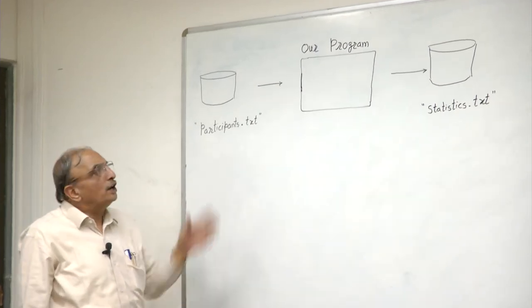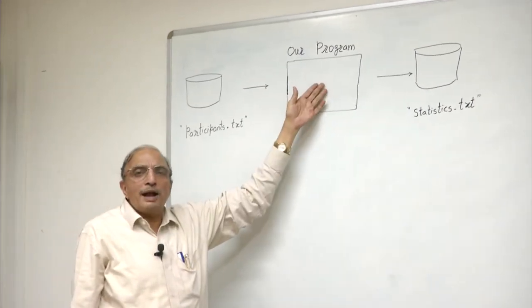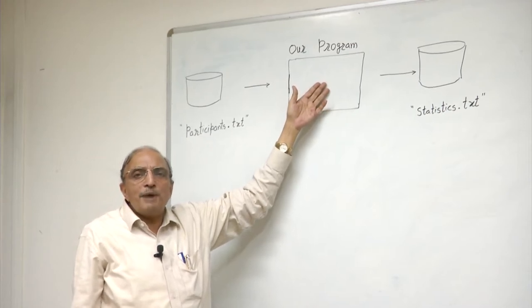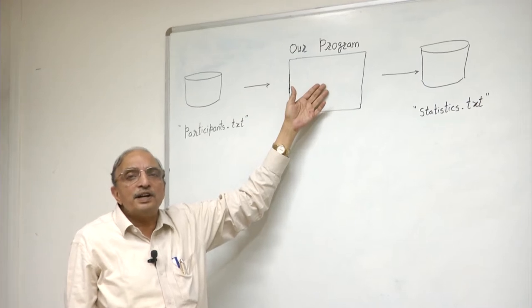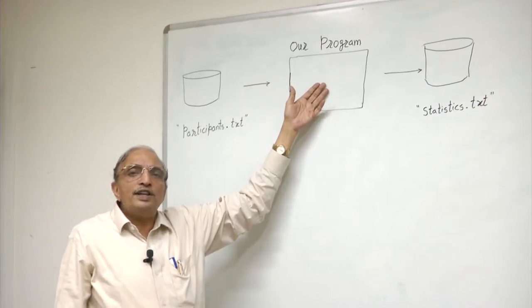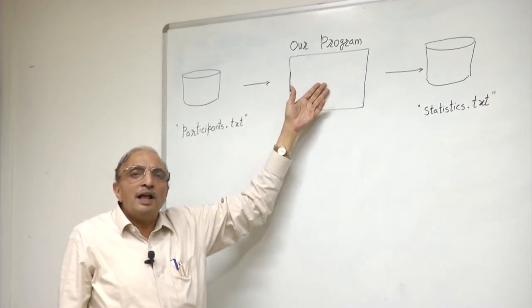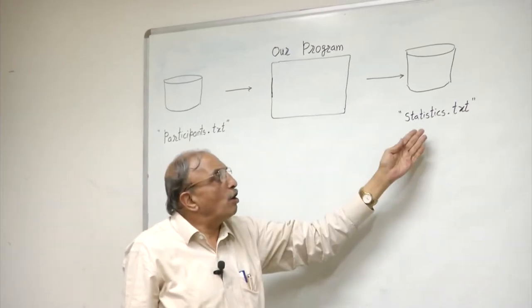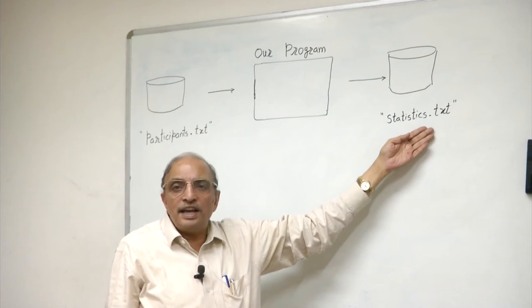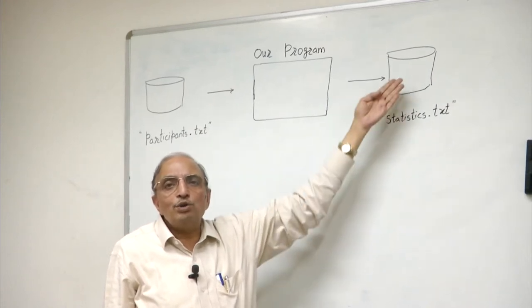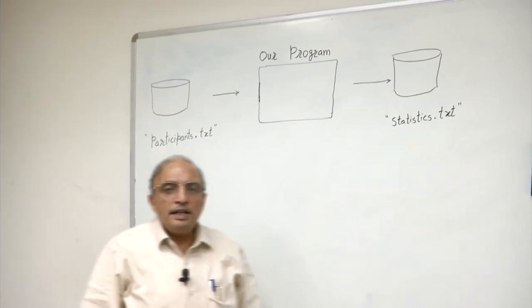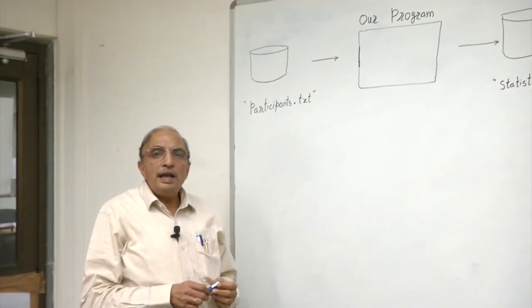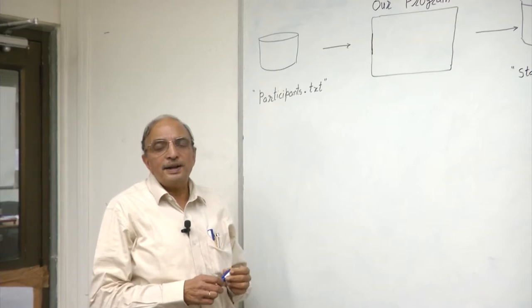What I wish to do is read this data into my program, calculate some statistics such as average marks scored by the participants and the standard deviation. Instead of producing the output on my terminal, I wish to write the text output in a file called statistics.txt which I wish to write onto a disk. In this session, we are going to look at the facilities available in C++ to handle such external data.